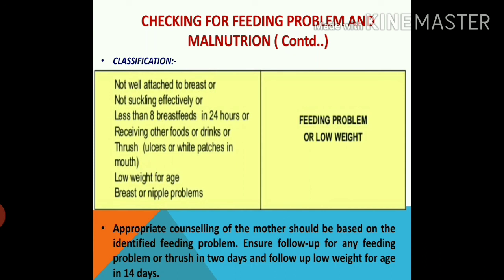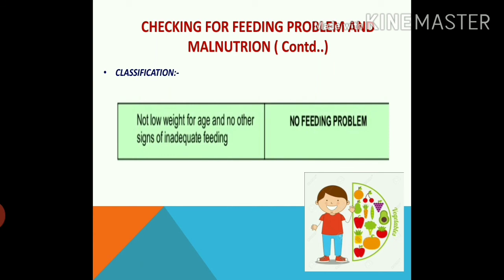If classified in yellow — feeding problem and low weight — the signs are: not well attached to the breast, not sucking effectively, fewer than 8 breastfeeds in 24 hours, receiving other foods or drinks, oral thrush, low weight for age, or breast and nipple problems. Provide appropriate counseling to the mother based on the identified feeding problem, ensure follow-up in 2 days for any feeding problem or oral thrush, and follow up in 14 days for low weight for age. If no low weight and no signs of inadequate feeding, classify as green — counsel the mother on correct feeding position, burping after breastfeeding, and provide general guidance.